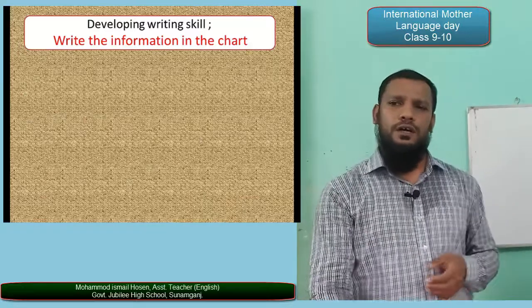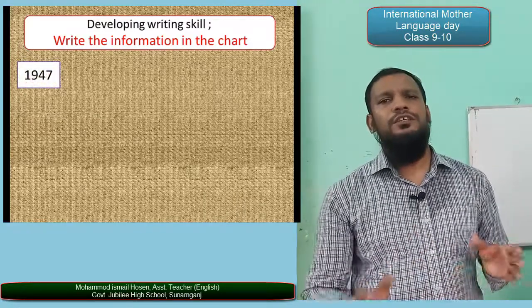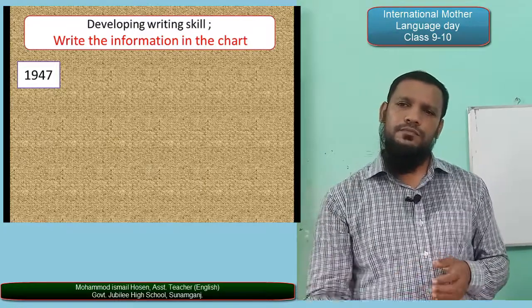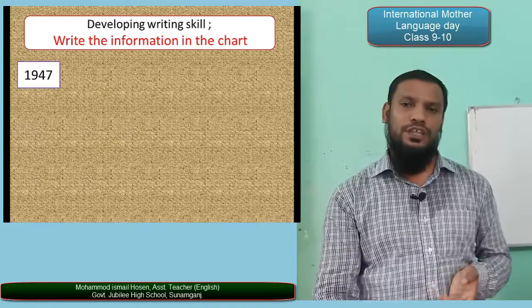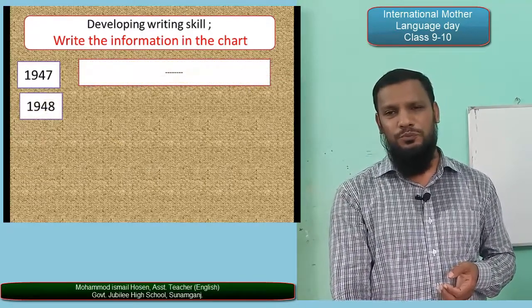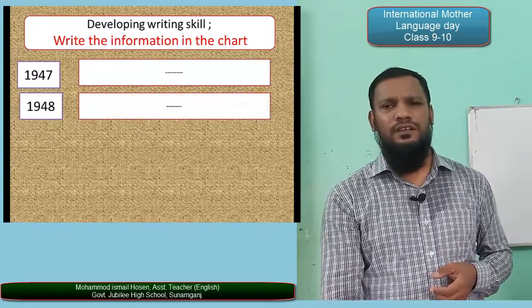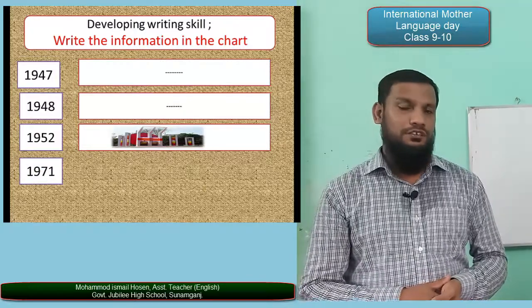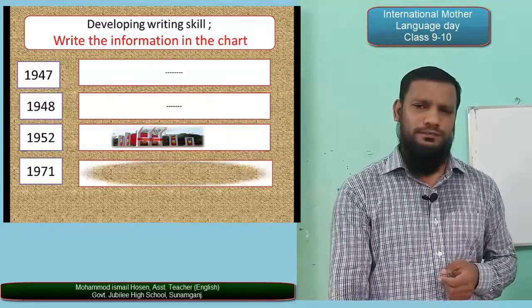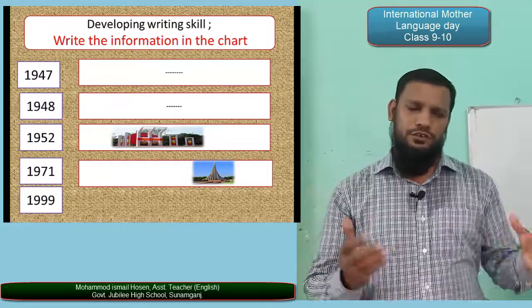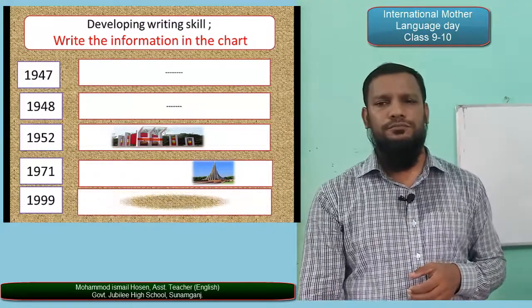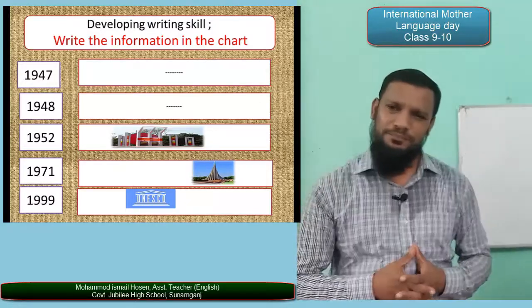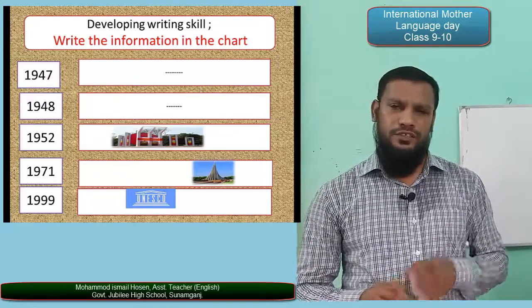Now for a writing skill activity, I'm going to give you some dates. You have to say what happened on those days. What happened in 1947? In 1948? In 1952? There is a picture clue related to each date. What happened in 1971? And what happened in 1999? Try to recall the information from the text and fill in the blanks.